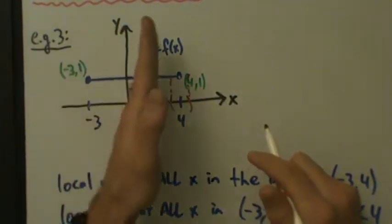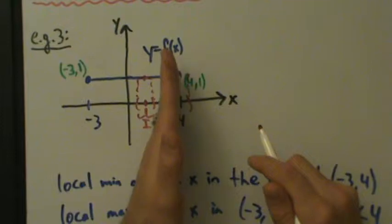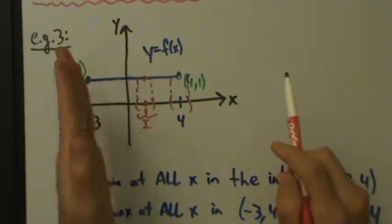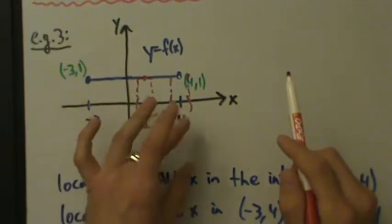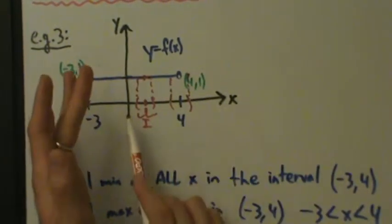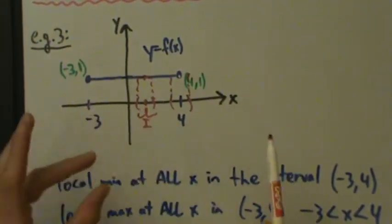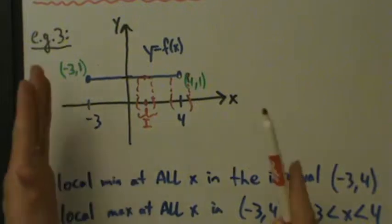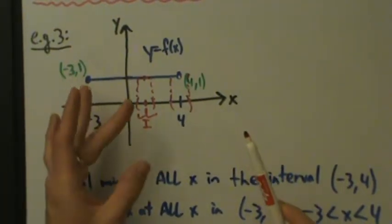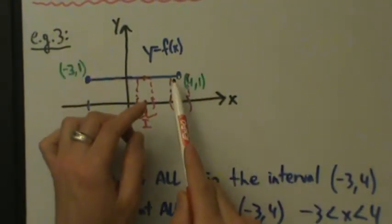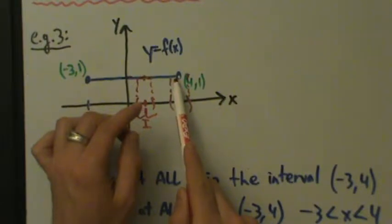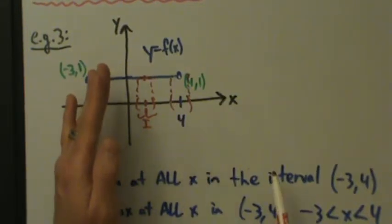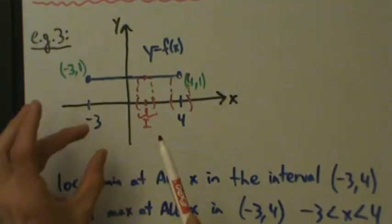No matter how close you are to the number 4, you could always get just a little bit closer. There is no real number just before 4. If you talk about integers, the number before 4 is 3, but for real numbers on the entire line, there is no previous number and there is no next number. For any two numbers that you pick, you can always find one in between them. So no matter how close you are to 4, you can always get a little bit closer, and you always have room to make a little tiny open interval around any x value you pick.